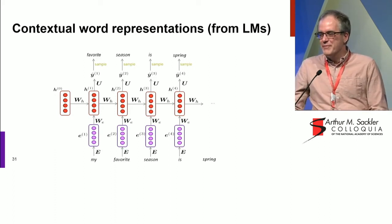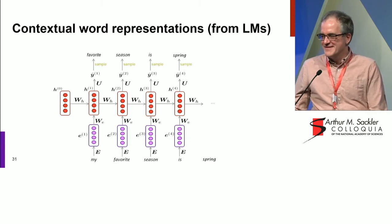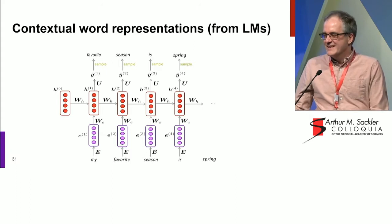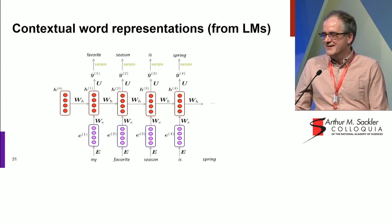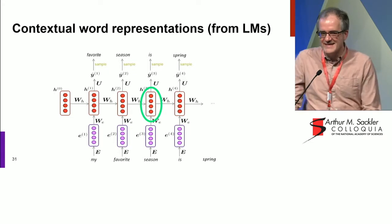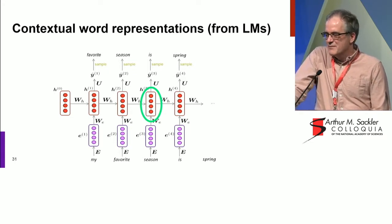There's been one other very big development recently, which is contextual word representations. Word meanings vary enormously in context, and our current word vectors seem not to deal with that. But if you think about what we had for these language models, inside the language models we had these hidden states. And you could think of these as the meaning of the word in context.